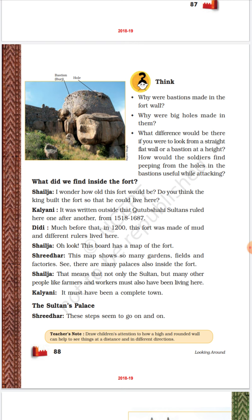The purpose of the thick and large walls was to prevent outsiders or enemies from entering the town. To stop enemies, they constructed huge, large, and tall walls. They also constructed bastions — burj — so that soldiers could see the enemy or outsider and attack them easily. Soldiers would hide inside the bastions and look through the holes.